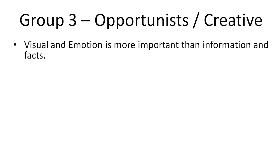Then we've got group number three: the opportunists, or creative minds. These types of people are first and foremost driven by visual and emotion. Visual and emotion is more important to them than information and facts — not that facts aren't important, but they think visually: does the site look nice, does the video look nice, does it make them happy? After they're emotionally satisfied, they start using information and facts to back up their emotions.